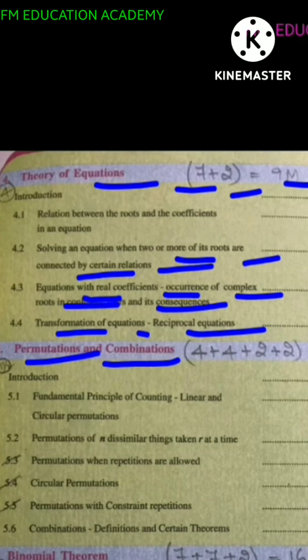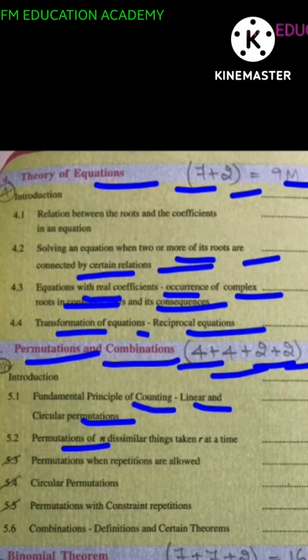Chapter 5, permutations and combinations. We'll have 4 mark plus 4 mark plus 2 mark plus 2 mark questions, that is, total 12 marks will come from this chapter. Fundamental principle of counting, linear and circular permutations, permutation of n dissimilar things taken r at a time.